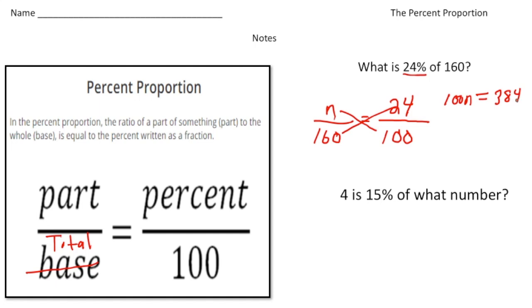So now that we have our equation, we can solve for n. I'm going to divide both sides by 100, and these cancel out. So n is going to end up being 3,840 divided by 100, which is 38.4. And there's your answer.